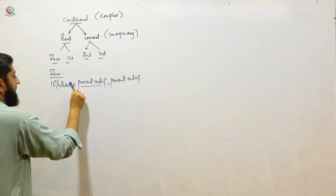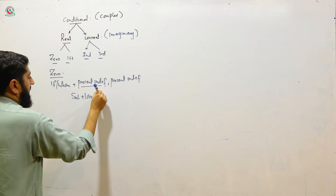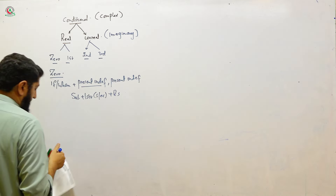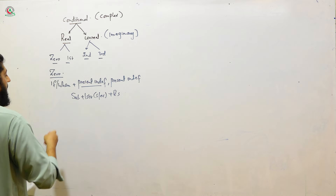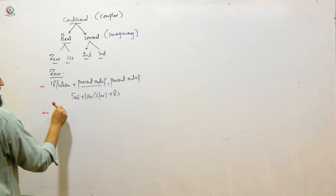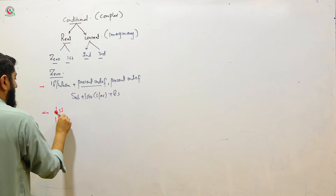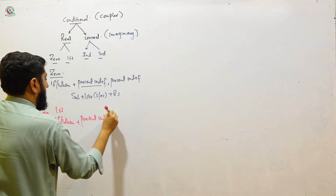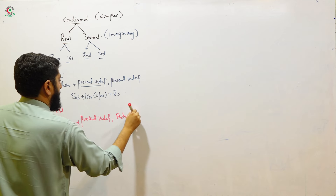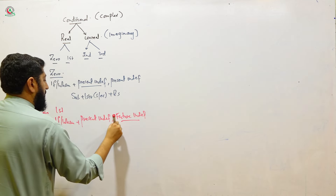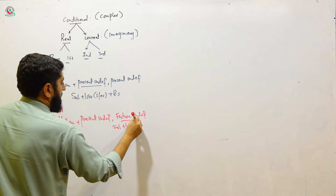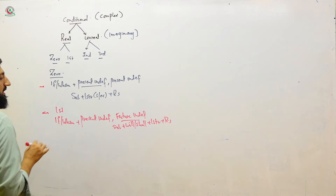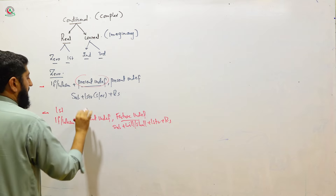Present indefinite: subject + first verb (as/are/is) + rest of the sentence. That is zero conditional. For first conditional, the structure is: if/when + present indefinite, the second clause uses future indefinite. Future indefinite: subject + will/shall + first form of verb + rest of the sentence. Now be careful with this.